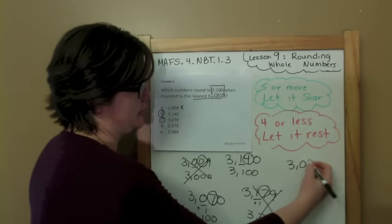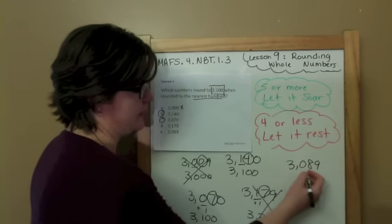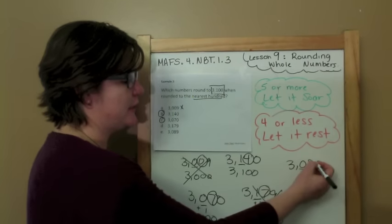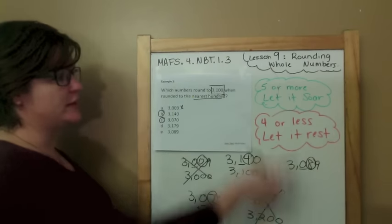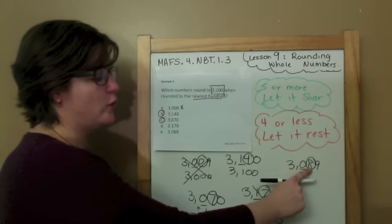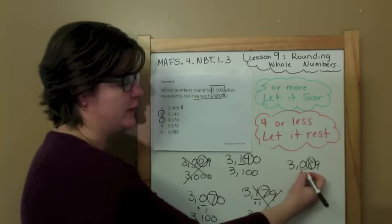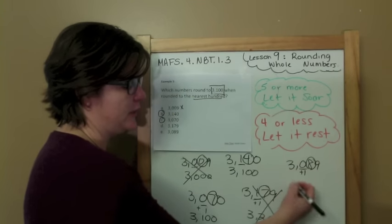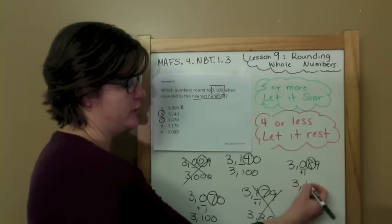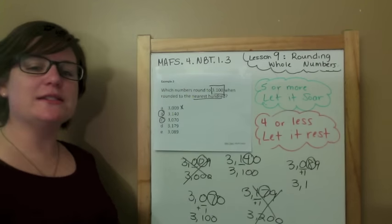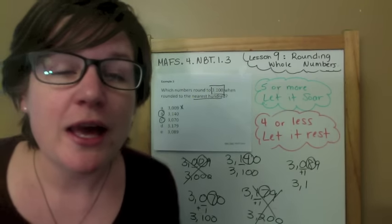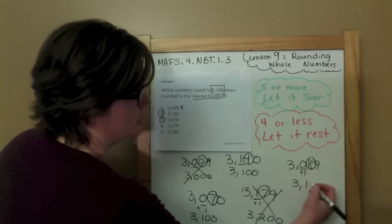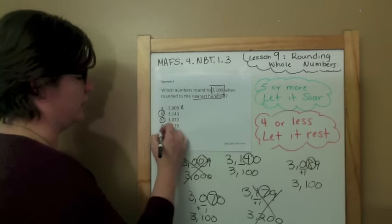Last one: 3,089. When you round, underline the place. Spotlight to the right — decide the digit's fate. Five or more, let it soar. Add one to the rounding place. Three comes down. Zero plus one is one. Everything else becomes zeros. It's gonna be a new hit song.